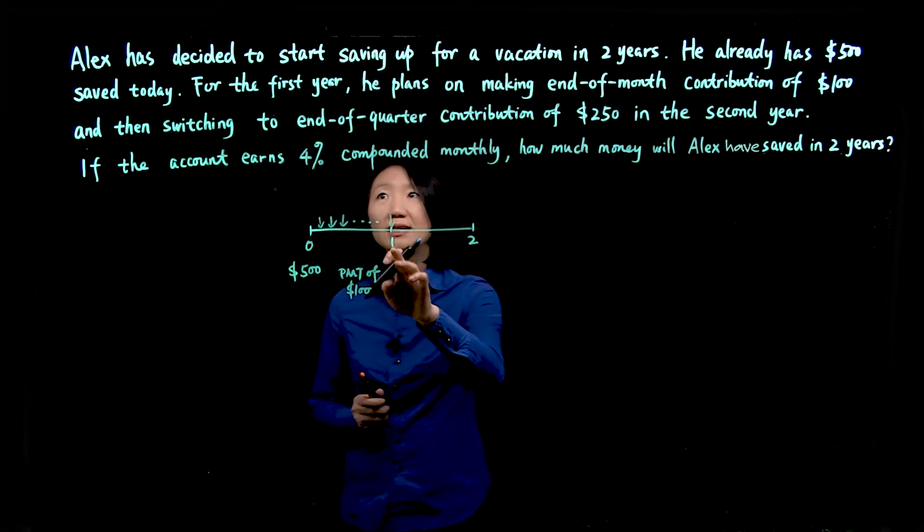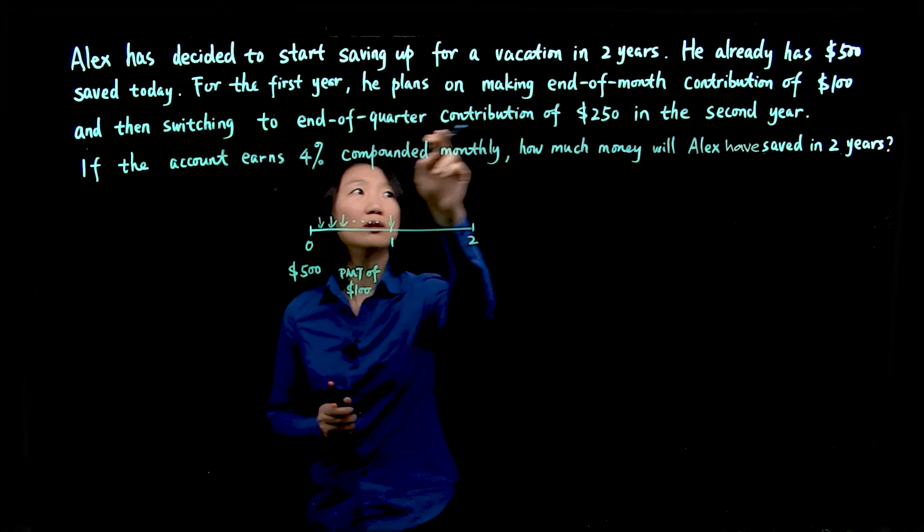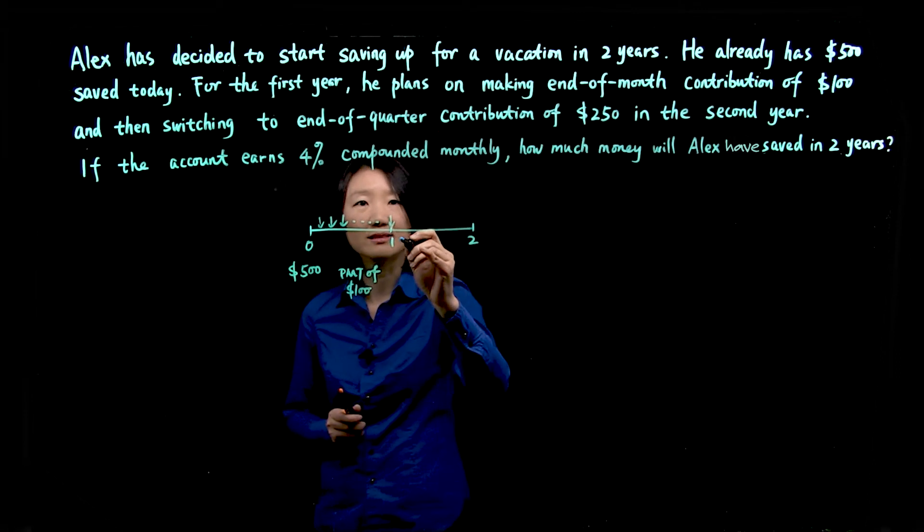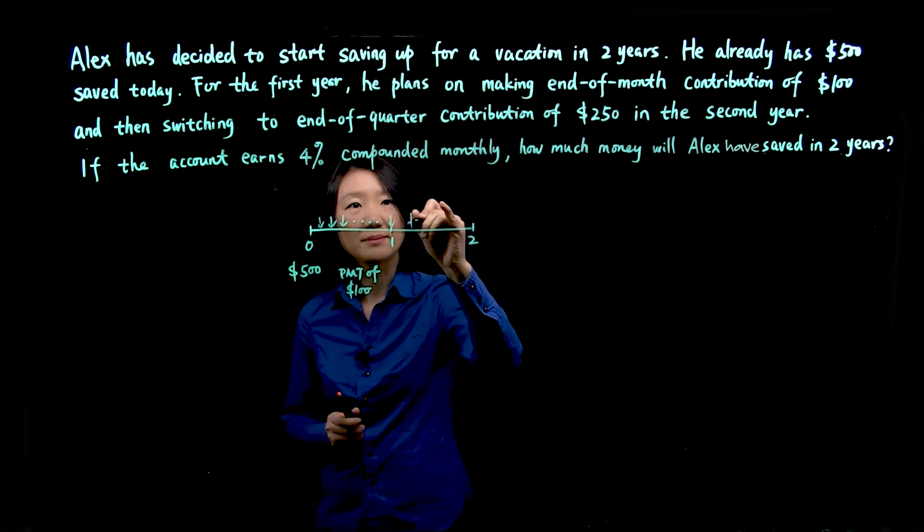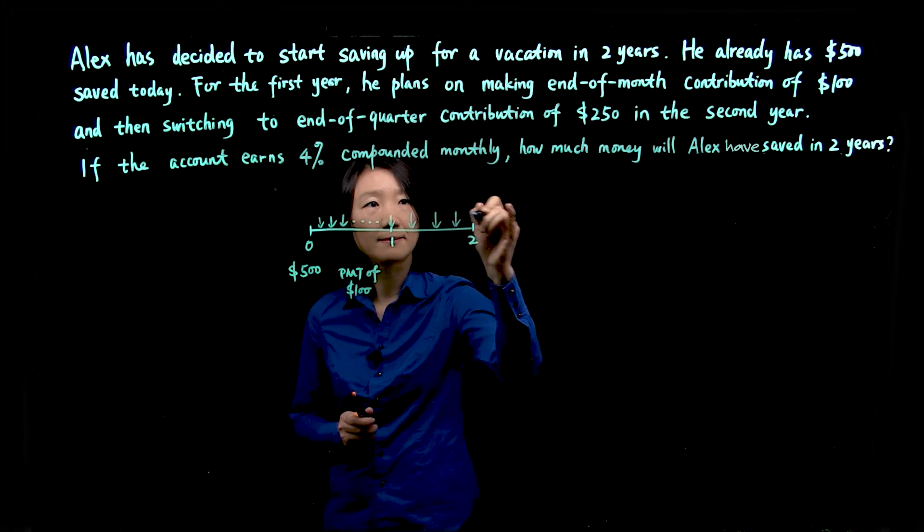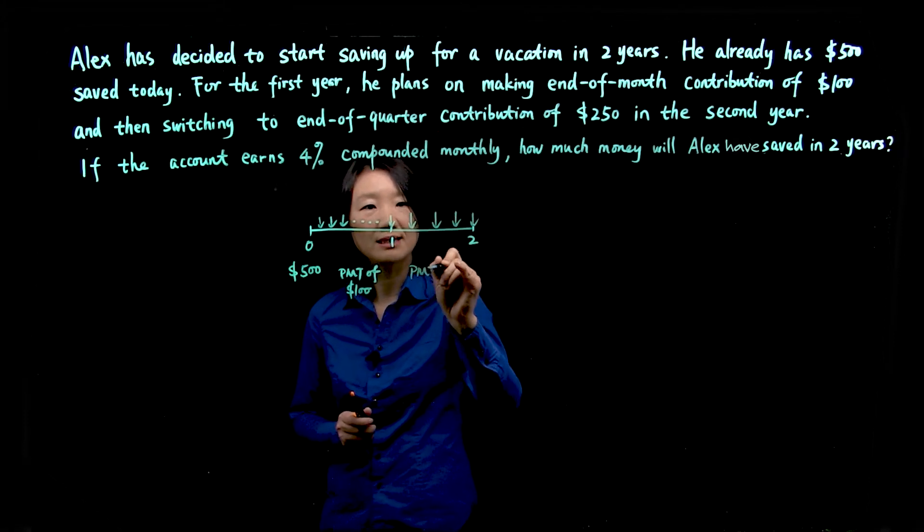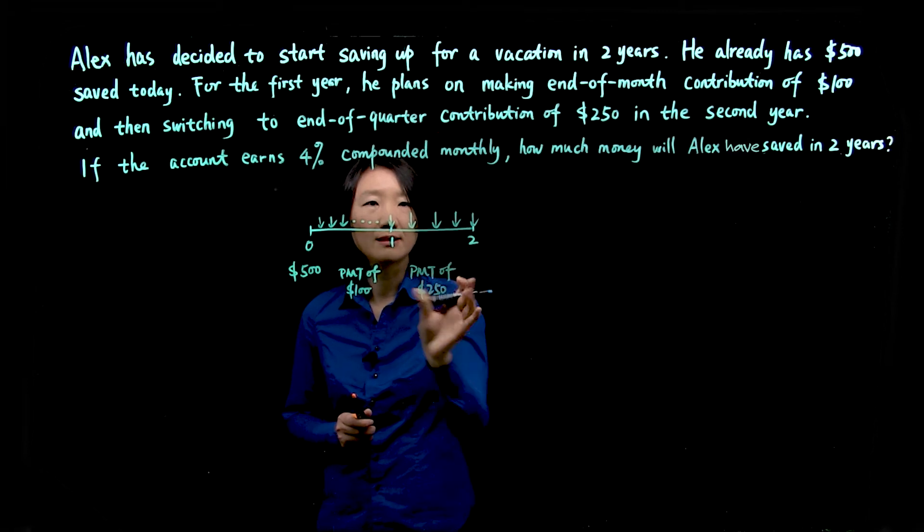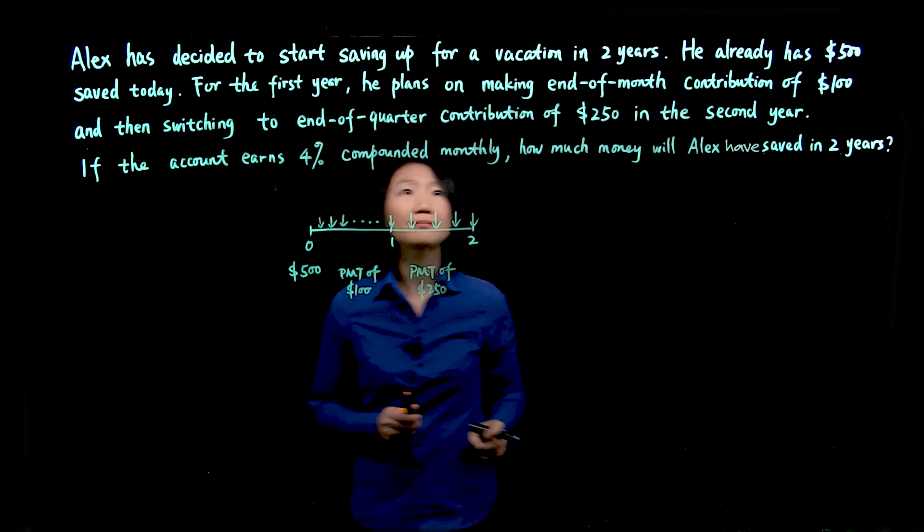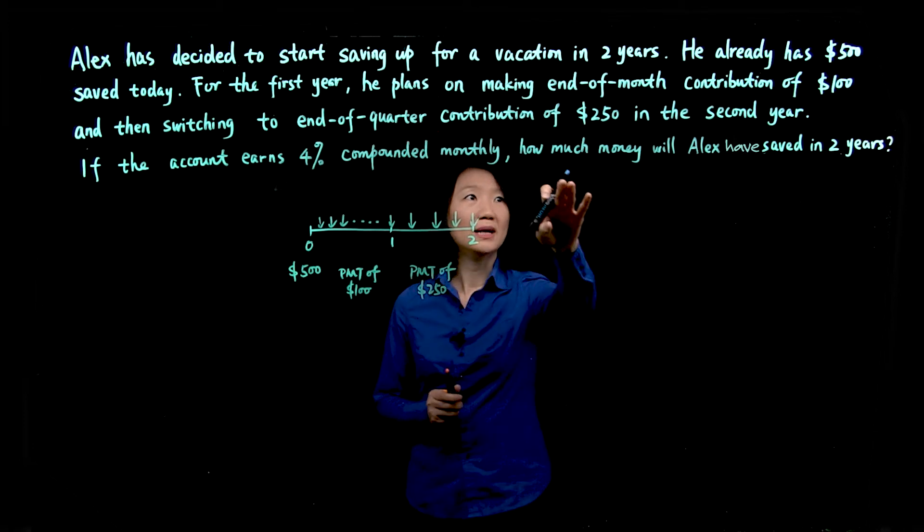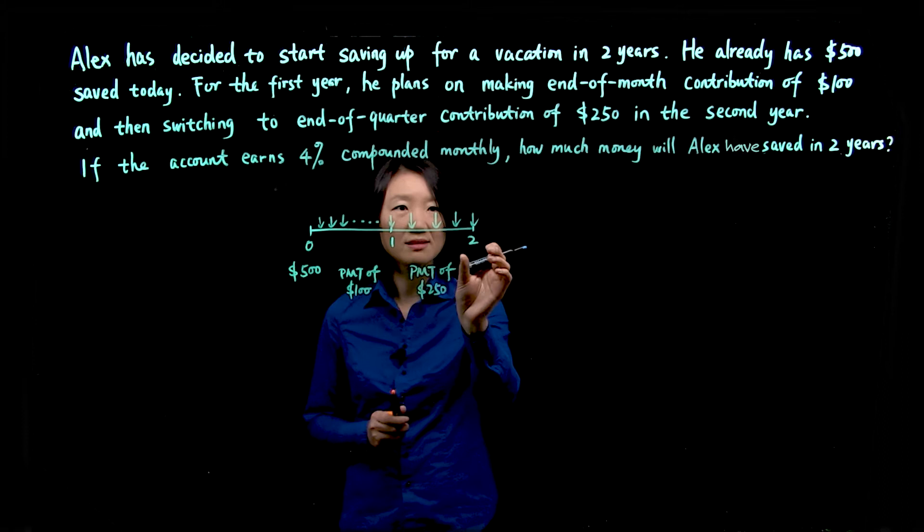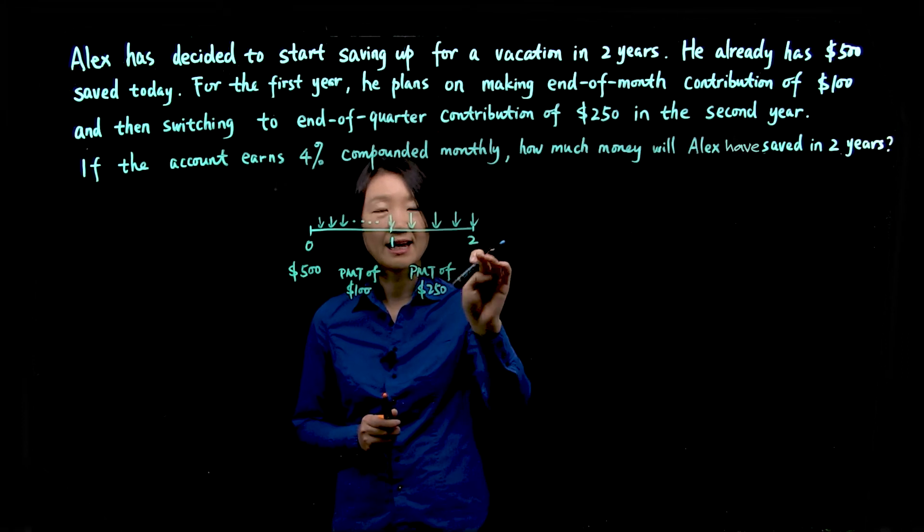So that's every month for 12 months. At the end of the year, he will switch to end of quarter contribution of $250. That's for the second year. End of quarter payment. So he'll make periodic payment of $250 for the second year. And how much money will Alex have saved in two years? So the question is, how much money will he have at the end of the two years?